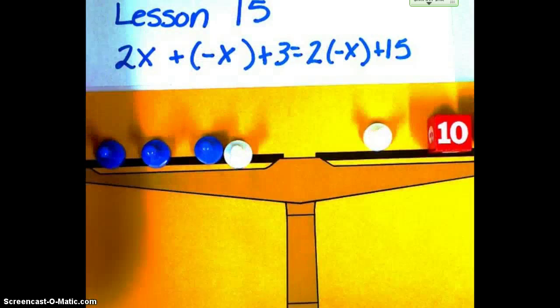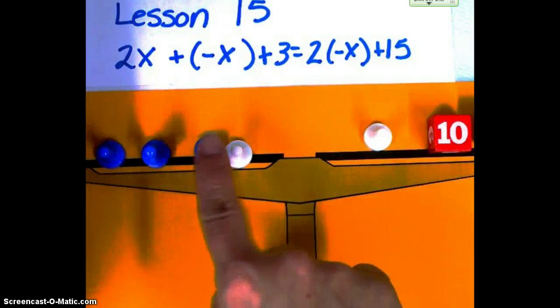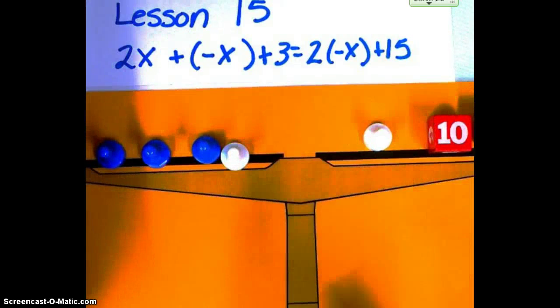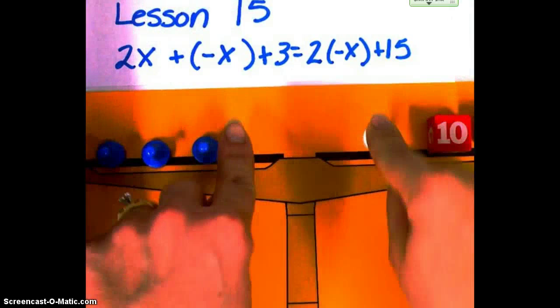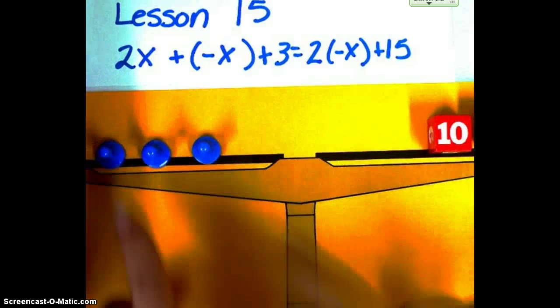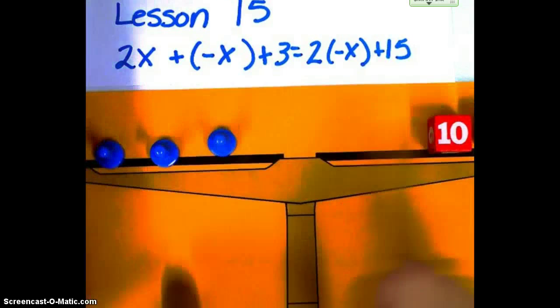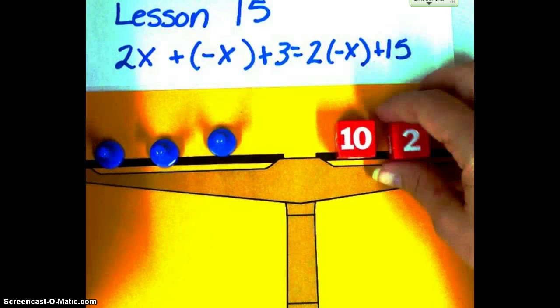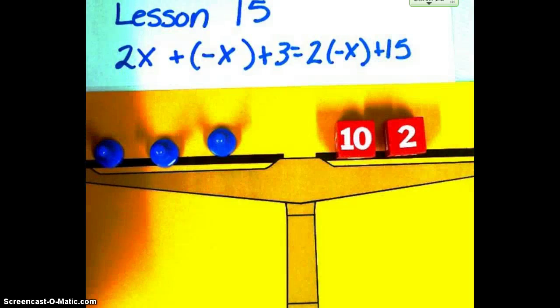remember those two together make that convenient 0, because this is a positive, that's a negative, so they'll work together. Now I can take one off of each of these sides. And I have 3x equals 12, so each one must equal 4.